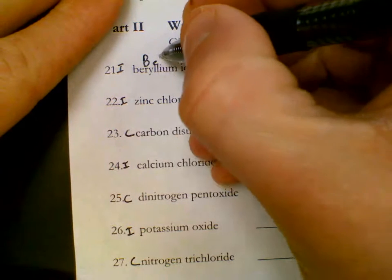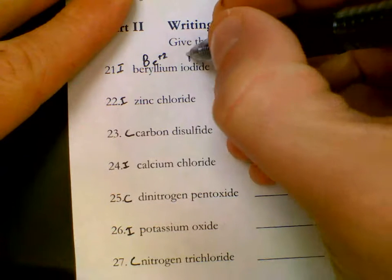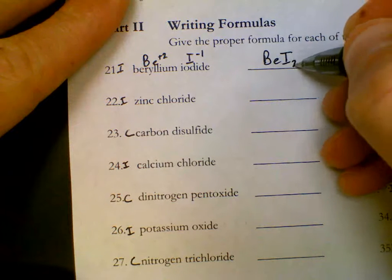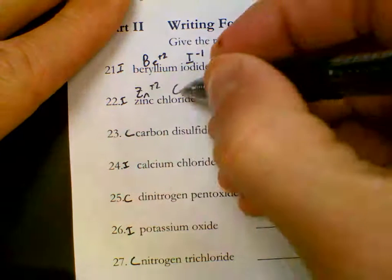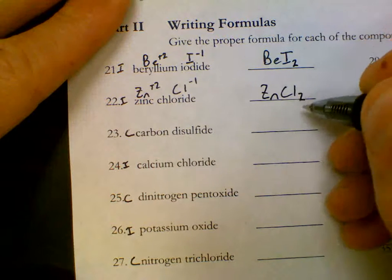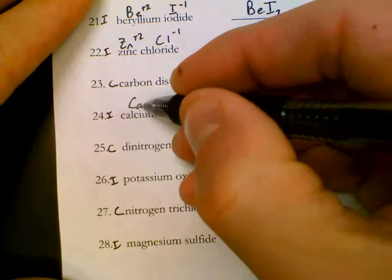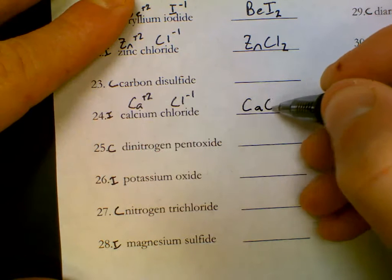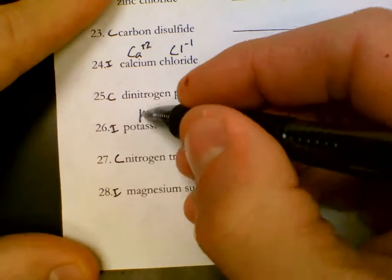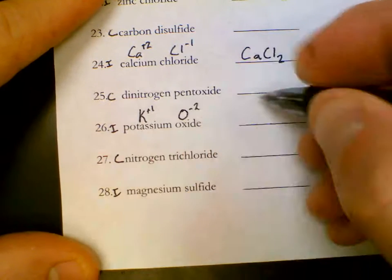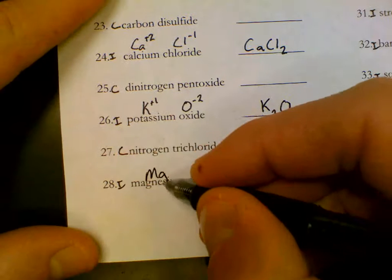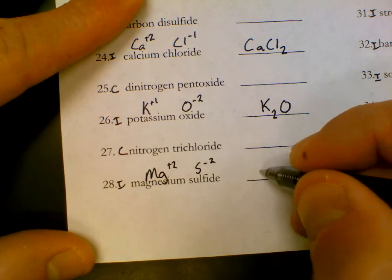Let's do all ionic again. BE is BE plus 2. That might be hard to know. Find the name beryllium. It's a group 2, it's a plus 2 ion. I is minus 1. 2 comes subscript on I. Zn is plus 2, Cl is minus 1. Zn Cl sub 2. Skip 23 because that's covalent. CA is plus 2, Cl is minus 1. Crisscross the 2 on the Cl. Potassium is plus 1, O is minus 2. Mg is plus 2, S is minus 2. Plus 2 minus 2 cancel.